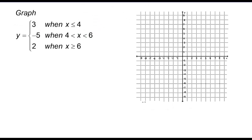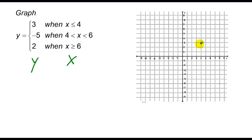Piecewise functions can have several different pieces. Here we have y equals 3 when x is less than or equal to 4, y equals negative 5 when x is greater than 4 and less than 6, and y equals 2 when x is greater than or equal to 6. I move over to 4, go up to 3, and put a filled dot because it's equal to. Then I graph the horizontal line y equals 3 going to the left forever.